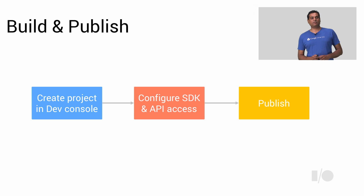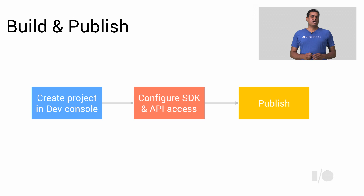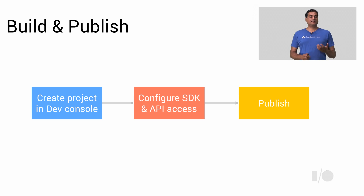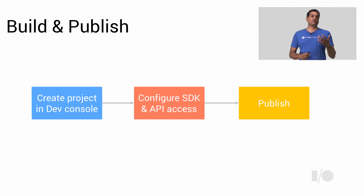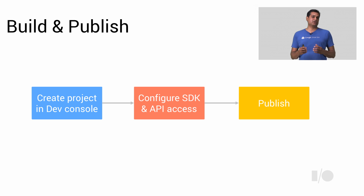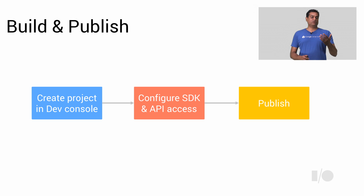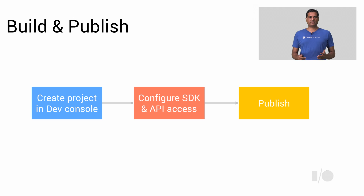Let's look at how to publish on the Marketplace. To publish, you need to first prepare your app. You need to create a project in the Google Apps Developer Console and configure the Google Apps SDK and other associated SDKs you need to build your integration. For example, if you are building a Drive integration, you need to enable the Drive SDK and also request Drive API access. Once you have done these two things, your app is ready for publishing.